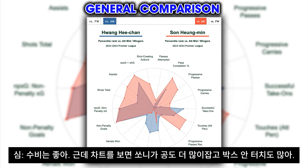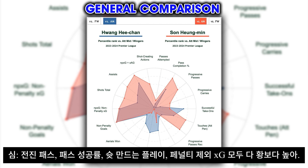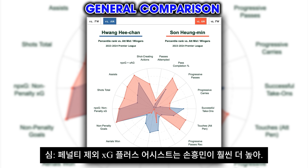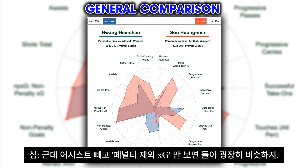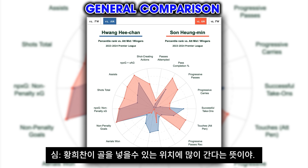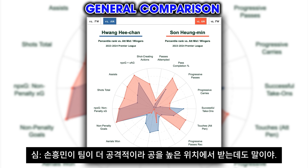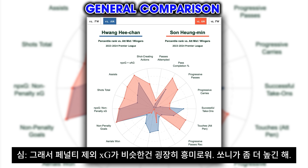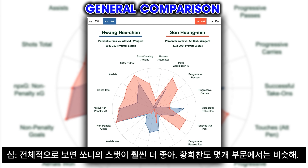Apart from the defensive stats, Son gets a lot more on the boards — touches in the penalty area, progressive passes, pass completion, shot-creating actions — and his non-penalty XG and assists are a lot higher. What's interesting is their non-penalty XG is actually very similar, which shows that Hwang gets into a lot of goalscoring positions comparable to Son, even though Son gets more attacking chances overall. Their non-penalty XG being similar is quite telling, albeit Son's is still slightly higher.